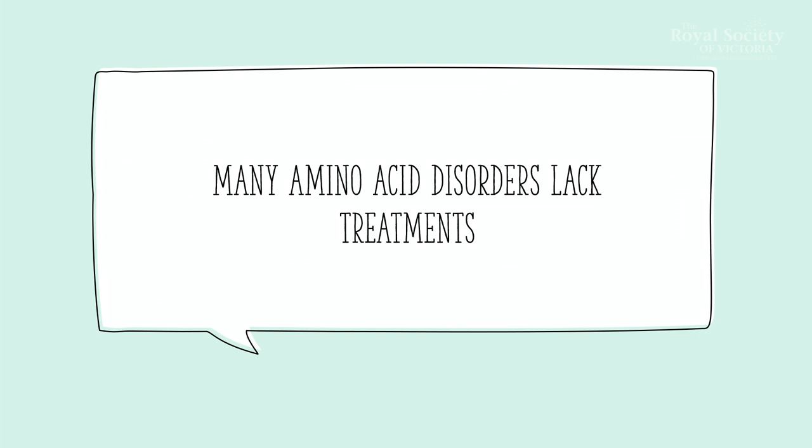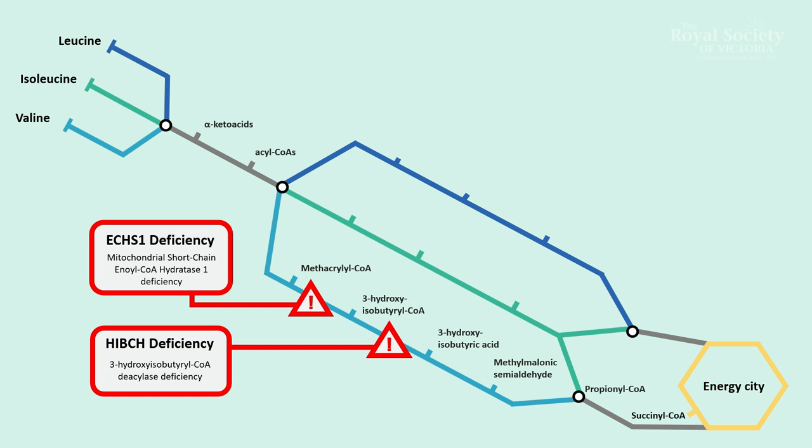And despite all this, many amino acid disorders still lack treatment. So that's what I'm here to talk about. I'm here to talk about two disorders in the valine pathway that currently lack treatments. And we'll start off with ECHI1 deficiency.